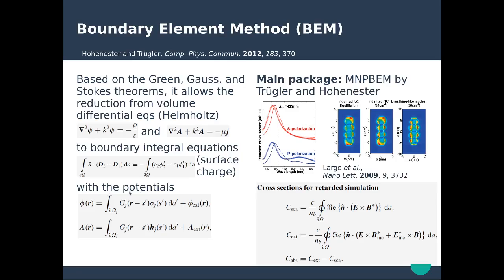You use the scalar potential and the vector potential, where you can recognize the Green tensor with the surface charges and surface currents. You solve those equations to calculate the potentials, then loop back to extract and calculate the electric and magnetic fields. You can express the optical cross-sections, which have different expressions than DDA, and calculate the far-field response and near-field response.